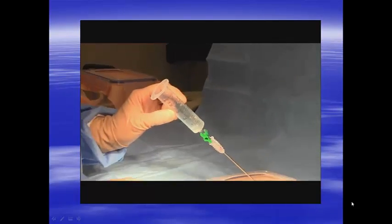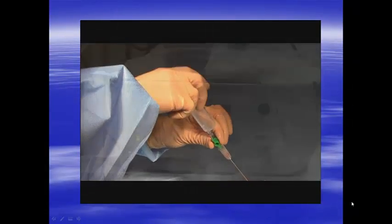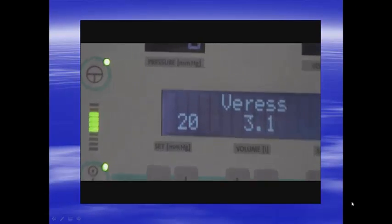A further observation of low intra-abdominal pressure confirms peritoneal placement. Pressure should be less than 10 mmHg.